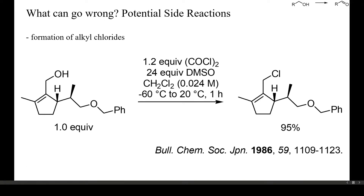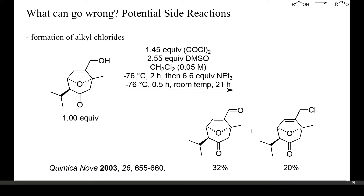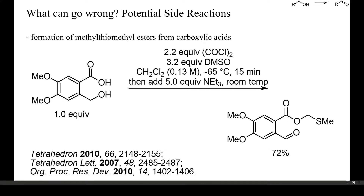Alcohols that readily form stabilized carbocations, such as allylic or benzylic alcohols, are occasionally converted into alkyl chlorides during Swern oxidations, particularly if an insufficient amount of base is added. In this example, no amine was added at all and complete conversion of the alcohol to an allyl chloride occurred. But even when amines are added under the standard Swern conditions, alkyl chlorides may result. Carboxylic acids can be activated during Swern oxidations and may be converted into esters or amides. In this example, a benzoic acid was alkylated by the intermediate chlorodimethylsulfonium chloride and a methyl-thiomethyl ester resulted.